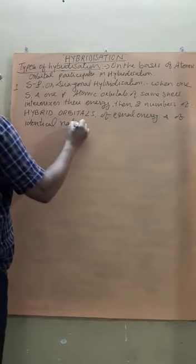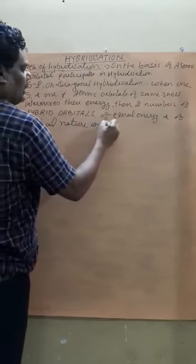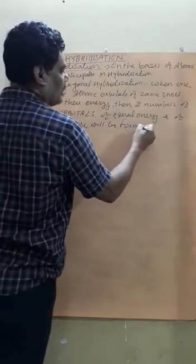Example: this is what S orbital, plus this is what PX orbital or simply P orbital. When these will participate in hybridization - remember, no overlapping, this is the process of intermixing, complete intermixing, not partial overlapping.